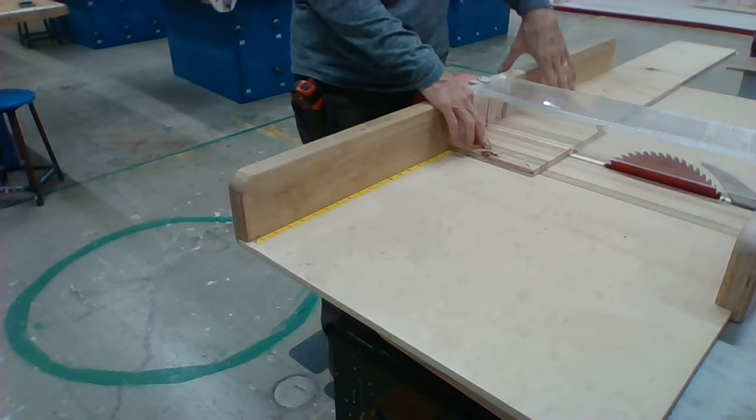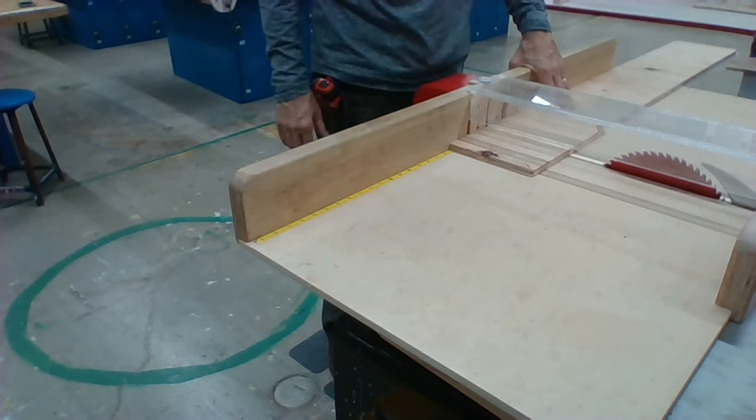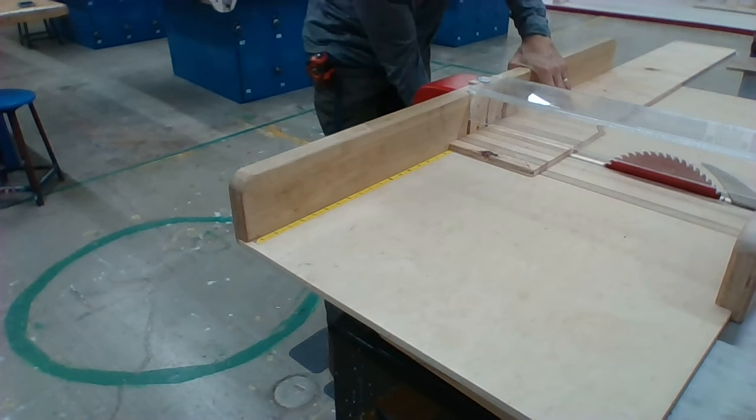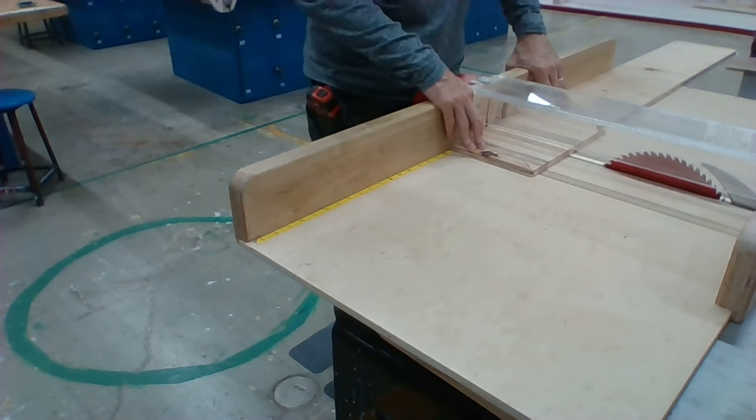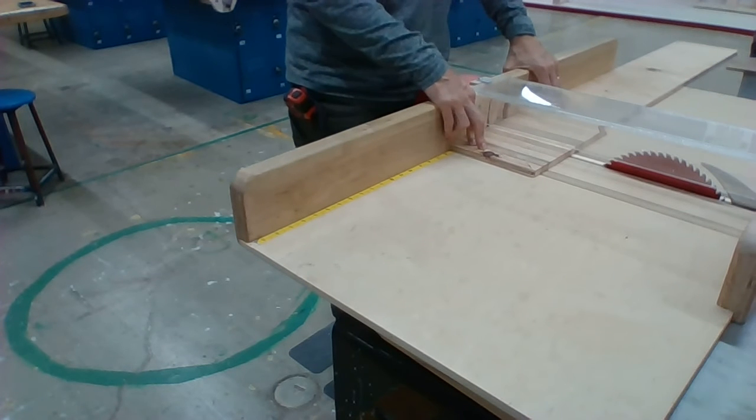I then am going to hold it firm down with my left hand with my thumb behind the fence area and holding the piece. While I'm doing that, I'm going to reach down and turn on the saw blade and move my right hand back up here and slide it through, make my cut, and then slide it back.